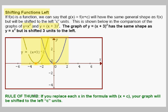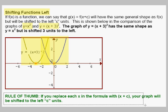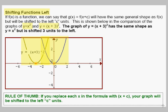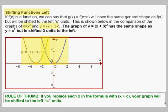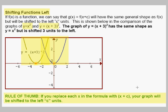As a rule of thumb, if you replace each x in the formula with x plus some number — let's say x plus c — the graph will be shifted to the left c units. In this example, we replaced x in x squared with x plus 3, and the result was shifting our graph 3 units to the left.